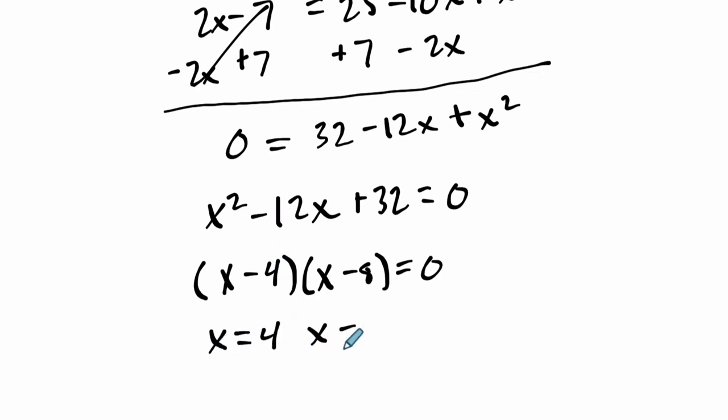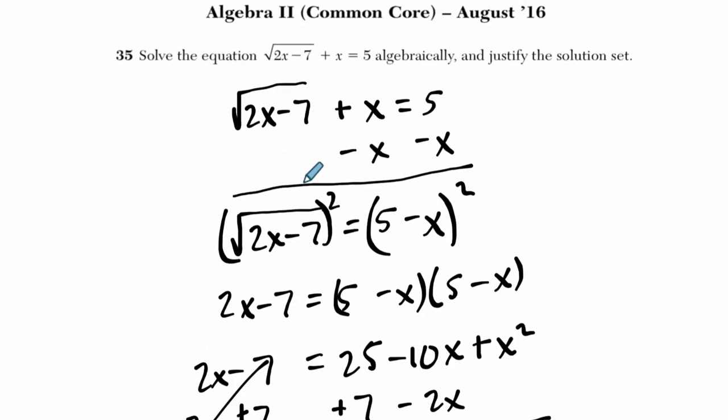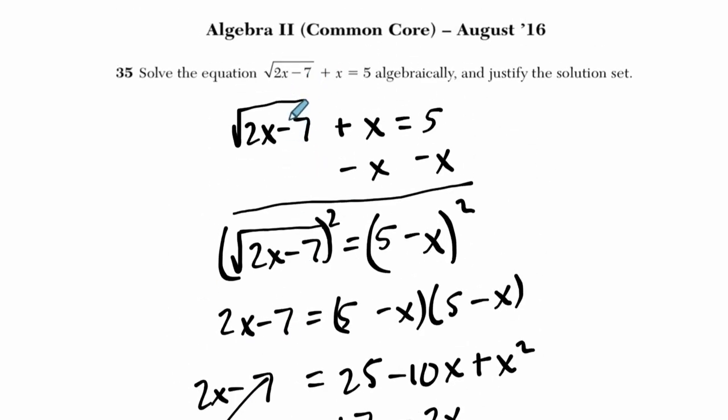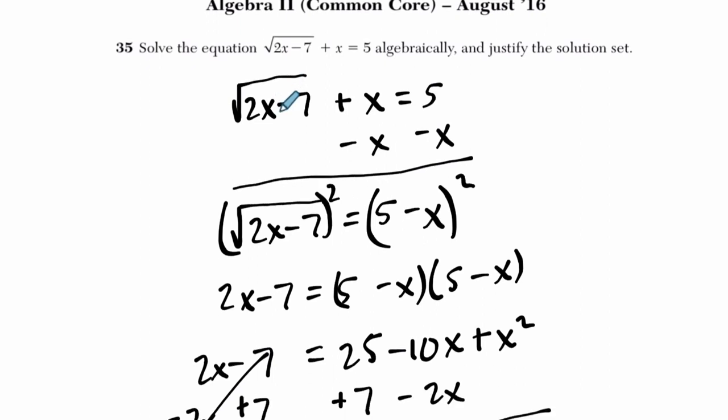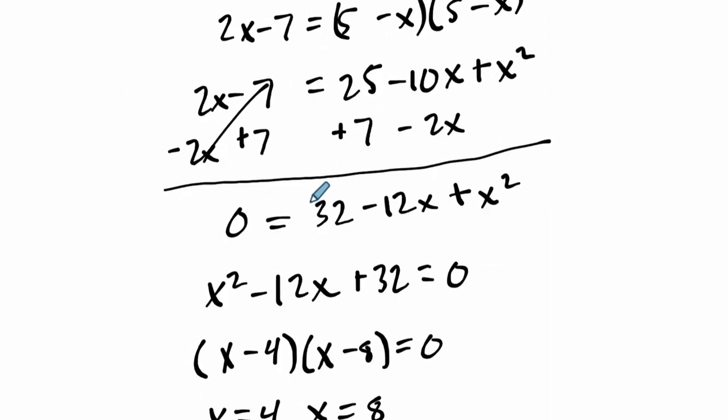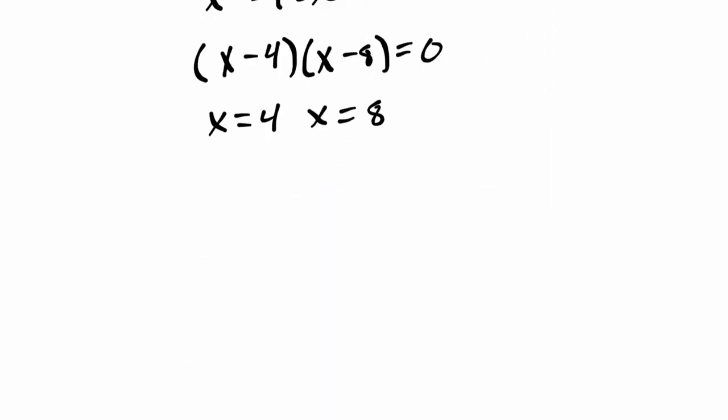If you're ever dealing with a problem with a square root or fraction with an x in the denominator, it's possible it could be undefined. In this case, it's possible because when you do have the square root in solving, you're squaring both sides. You could create extraneous solutions. So let's check both of these real quick, and I think we'll find that one of them is extraneous.